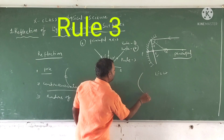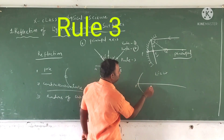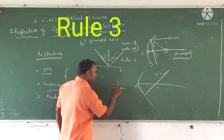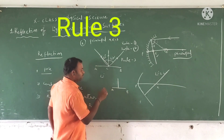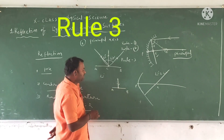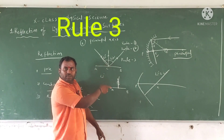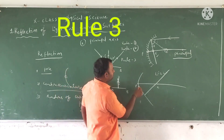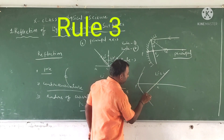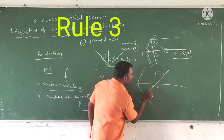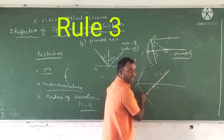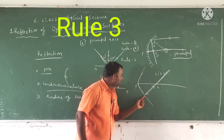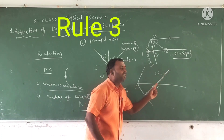Rule three: any ray passing through the center of curvature, incident on the concave surface, after reflection it passes through the same line but in the opposite direction. Just as in a plane surface a ray perpendicular to the surface reflects back along the same line in the opposite direction, similarly in a curved surface any ray passing through the center of curvature is incident and reflected along the same line, but in the opposite direction. This is rule three.